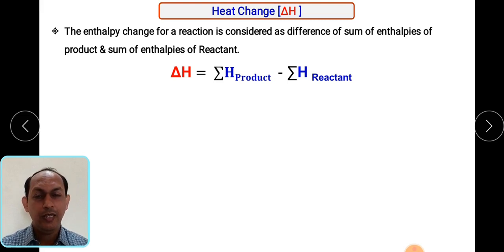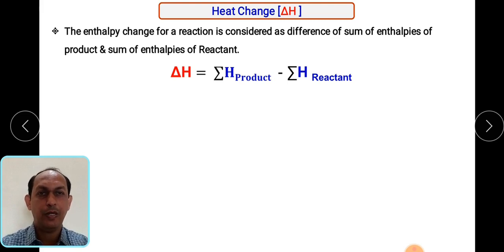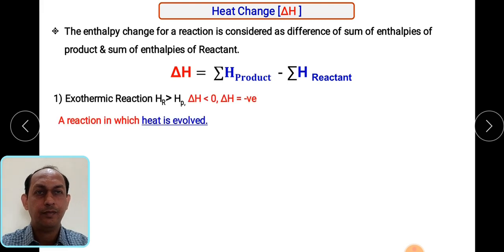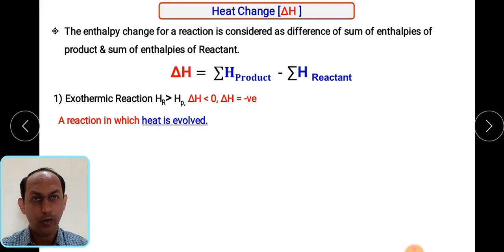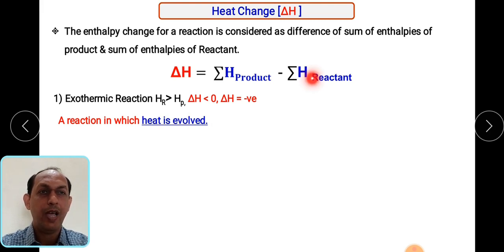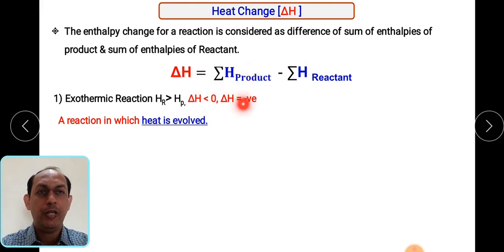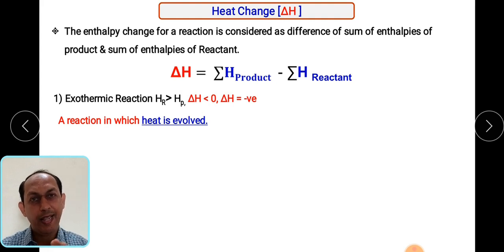The heat that is released or absorbed in a reaction is calculated as the difference between the enthalpies of products minus reactants. If the reaction is exothermic — meaning heat is evolved — then the enthalpy of products will be lower than the enthalpy of reactants. In that case, delta H will be negative. Always remember: for an exothermic reaction, delta H will be negative.